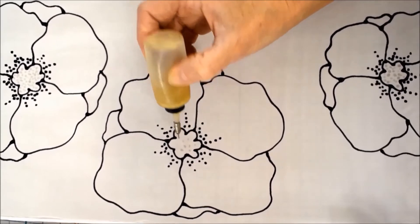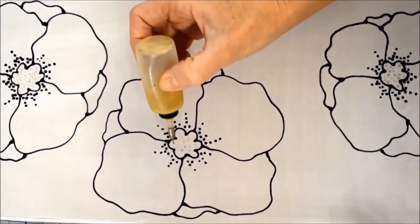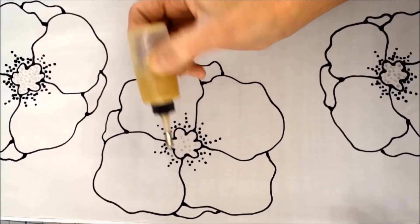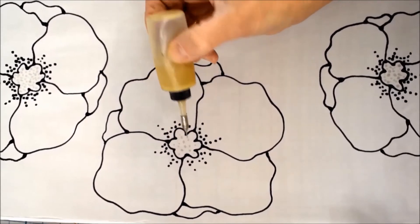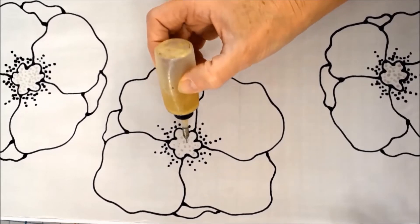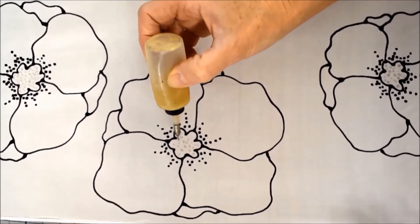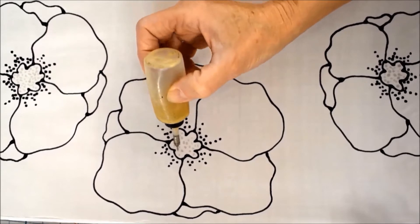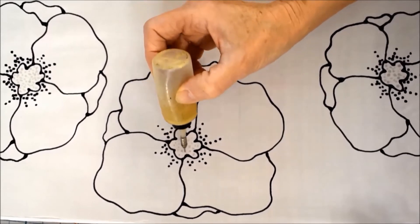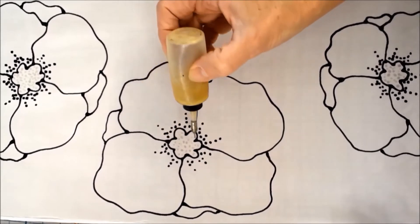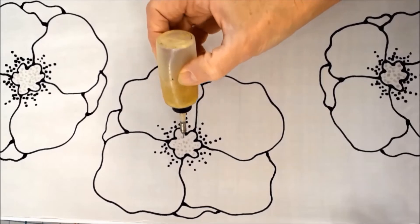I'm adding white dots to give the center of the poppy some texture and interest. The background I'm going to do in a solid color, but then I'm going to use salt to give it all kinds of texture. Remember, you can keep your design simple because the beauty of silk painting comes in the blending, in the colors, and in the richness of the silk.